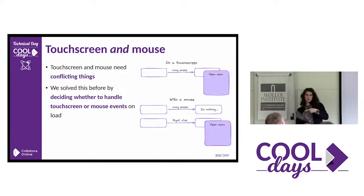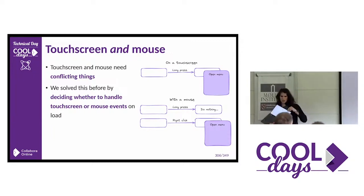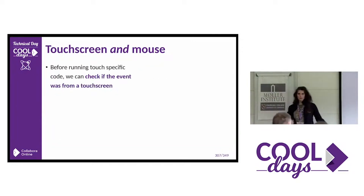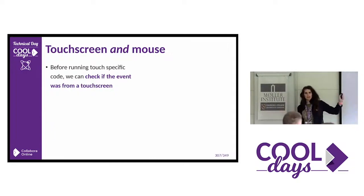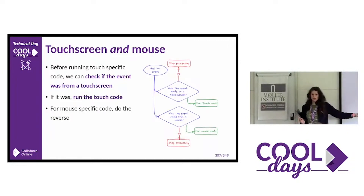But you can flip a Chromebook between tablet and laptop mode, and suddenly you lose your touchpad. And when you flip it back, you want your mouse events again. So now, before running these events, we check if the event itself came from a touchscreen. We registered both sets of events, and that lets us choose at runtime: do we want to run the mouse code, or the touch code?